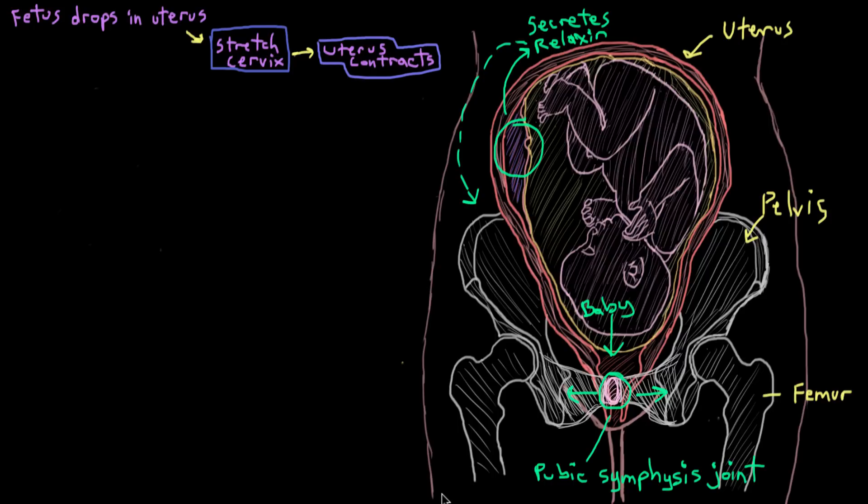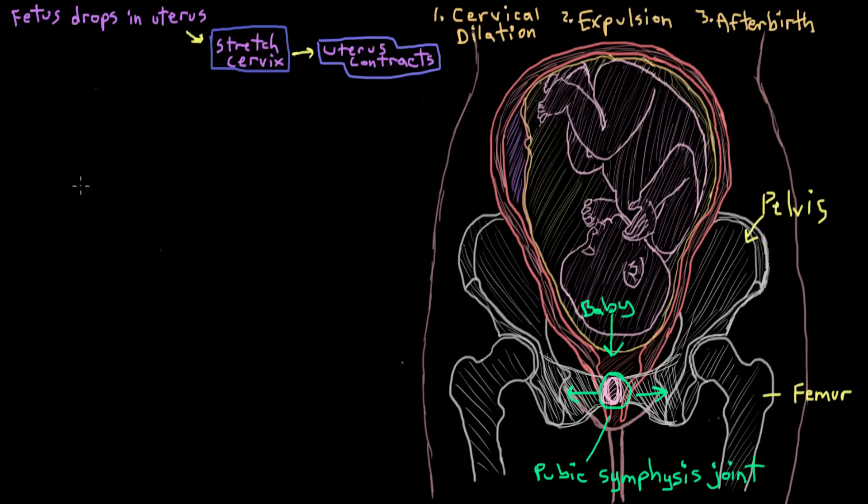So now that we have an idea of what's happening in mom's body just before labor, let's look at the actual stages of labor. And there's three main stages. There's cervical dilation, expulsion of the baby, and the afterbirth. And in total, labor can take anywhere from 7 to 20 hours, depending on how quickly each stage progresses.